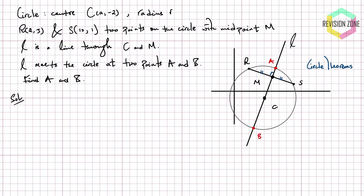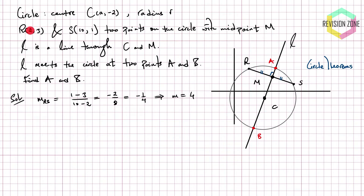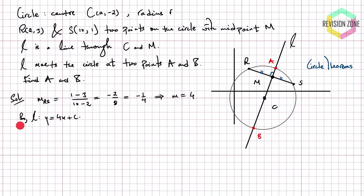So how are we going to figure out the equation of line L? We're going to find the gradient of the segment RS, knowing that segment is perpendicular to L. We're going to use that to figure out the gradient of L, and then we're going to use the fact that M lies on L to figure out the equation of L — in other words, to find the y-intercept of L. So we can write down the gradient of RS, which is the change in y over change in x. Change in y is 1 minus 3, and x2 minus x1 is 10 minus 2. That simplifies to minus 2 over 8, which is essentially minus a quarter. The gradient of L, which is perpendicular to RS, is the negative reciprocal, which gives us 4. So the equation of L has to be y equals 4x plus c, where c is yet to be determined.